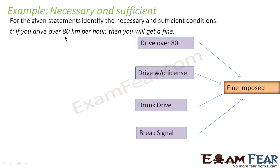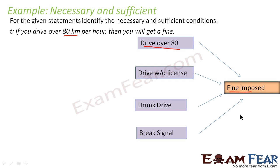The question is: if you drive over 80 km per hour, you get a fine. This is an if-then condition. There are other conditions also which can impose a fine on you — for example, if you drive without a license, you get a fine; if you drive in a drunk condition, you get a fine; if you break a signal, you get a fine.